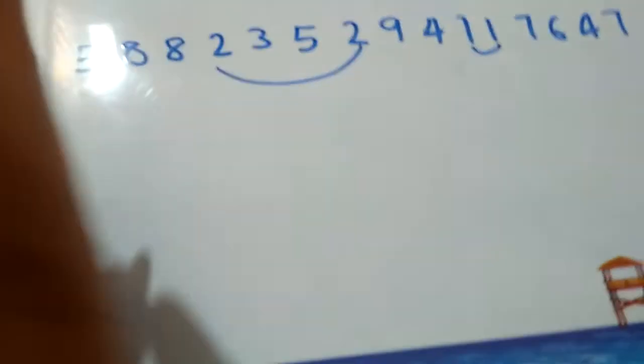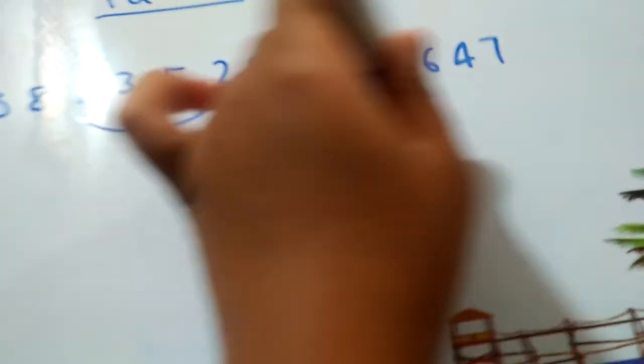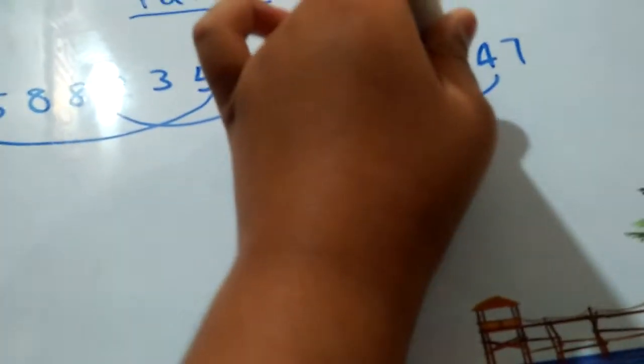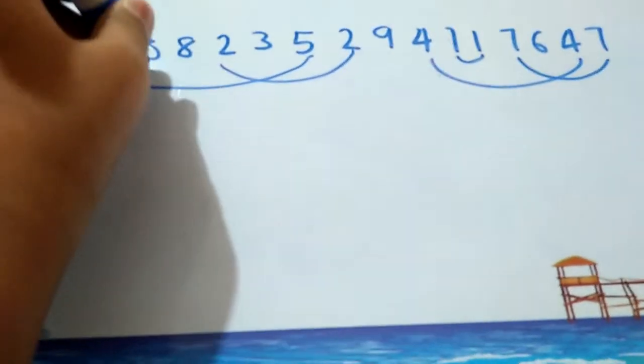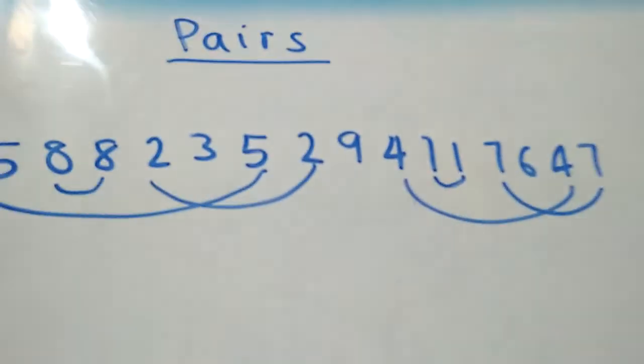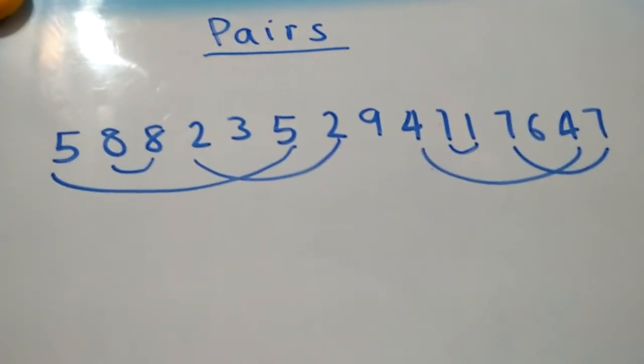Well, three doesn't have a pair either. Four has a pair, five has a pair, six doesn't have a pair, seven has a pair, eight has a pair. Except three, six, and nine, they don't have pairs.